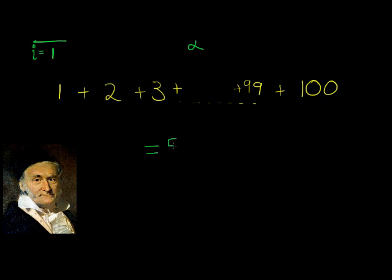And within only a few seconds, he was able to give the answer. He said, teacher, the answer is 5,050. Of course, the teacher didn't believe him because the teacher himself wouldn't have been able to get the answer that quickly. So how was this young mind able to get that answer so quickly and so brilliantly?